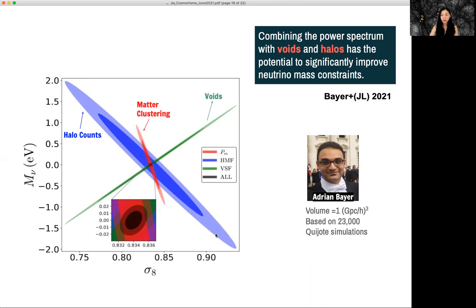voids and halo counts, they have very different parameter degeneracy. And when you combine the three statistic together, you can potentially get a very small contour.